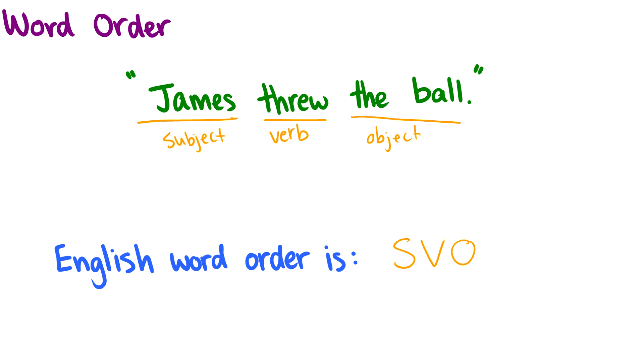Now, you can imagine if there's subject, verb, and object, there's going to be six possible outcomes that you can get in a language. So you could have SVO, like English. You could have SOV, where the object comes before the verb. You could have VSO, VOS, OSV, or OVS. So there's six different possible ways that subjects, verbs, and objects can be represented in a sentence, and depending on your language, you'll have a different way of doing this.